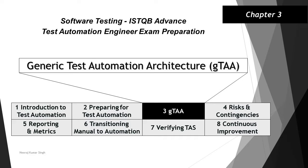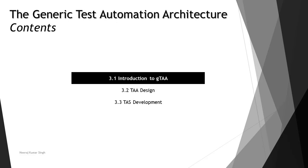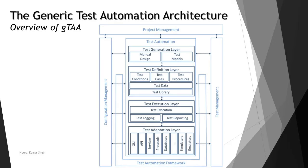Hello friends and greetings for the day. Welcome back to another tutorial on ISTQB Test Automation Engineer. We are in chapter 3 looking at topic 3.1, introduction to GTAA — that is Generic Test Automation Architecture — and this is part 4 of this tutorial. This part 4 continues with the diagram on the architecture which we saw earlier in the previous tutorials.